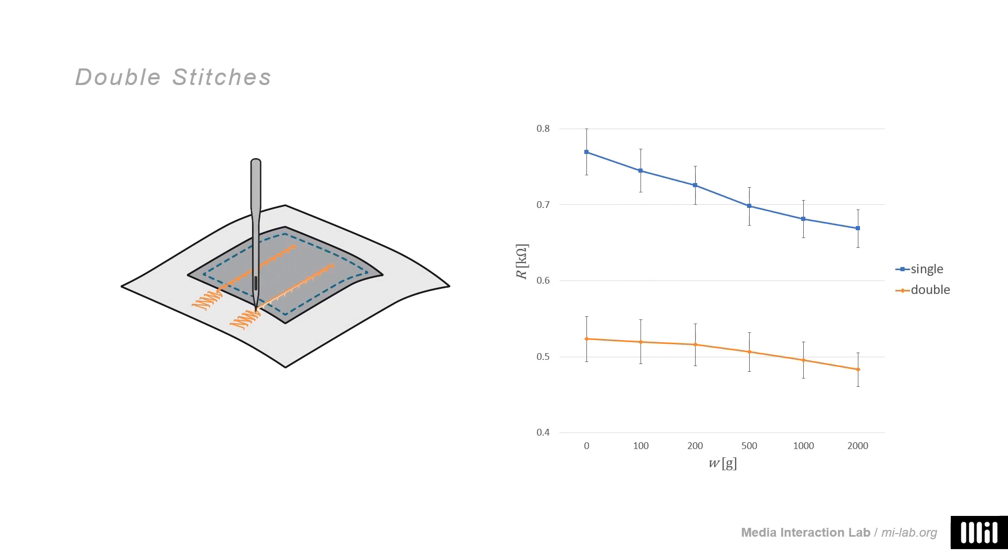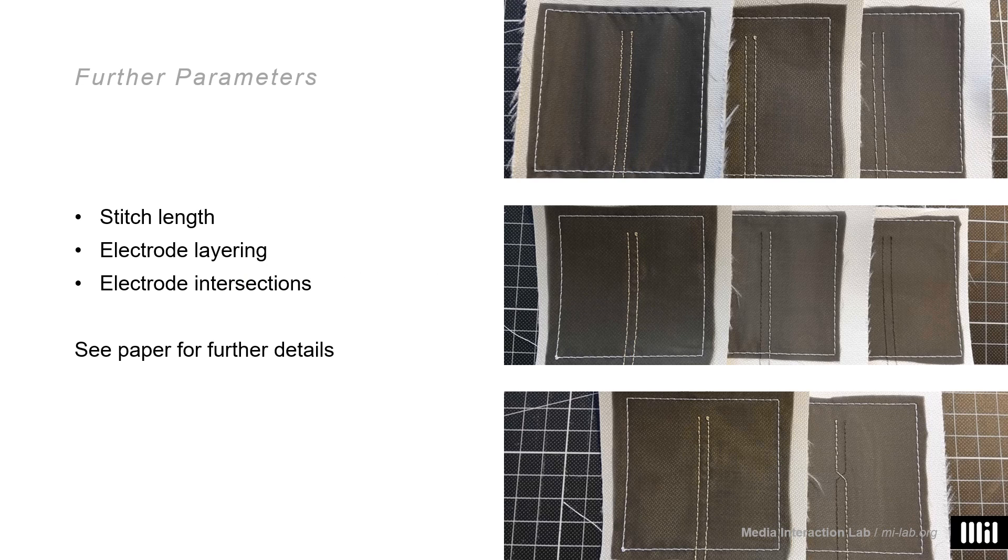Furthermore, we identified several additional parameters that are also highly influential to the sensor characteristics. Mostly they are related to the interface effect I mentioned earlier. For example, what we call double stitches, which is when you embroider both ways along a single track. This is necessary for some of our pattern designs, as you will see later, and expectedly it has a huge impact on the amount of contact between yarn and resistive sheet. Also, mostly related to the interface effect, there are several more parameters such as stitch length, electrode layering, and intersections. I skip over them here due to the time limit, so please refer to the paper for more details.